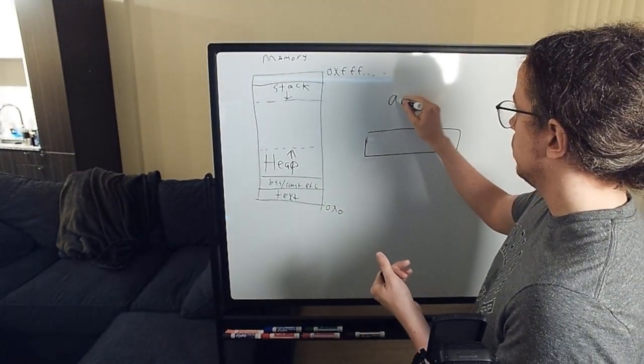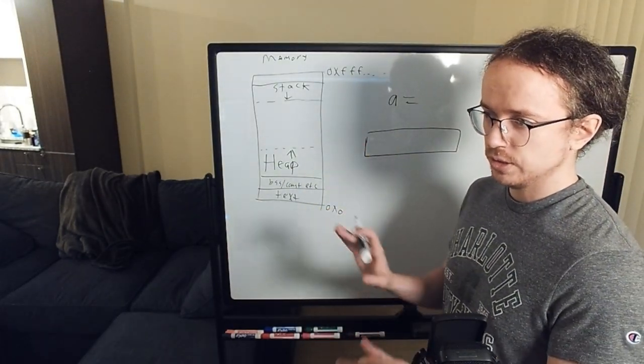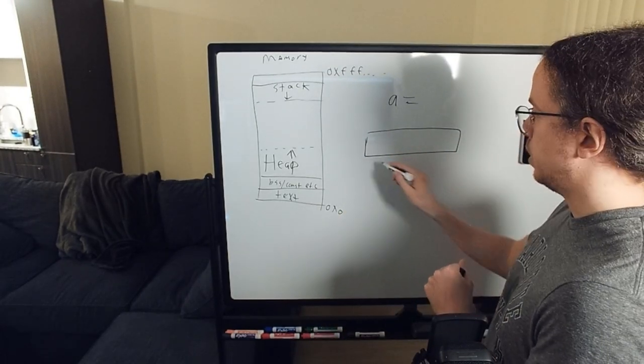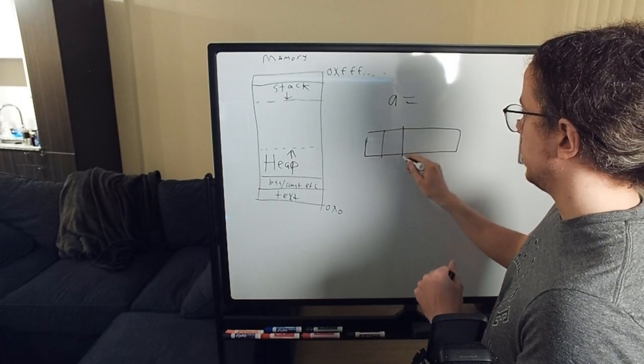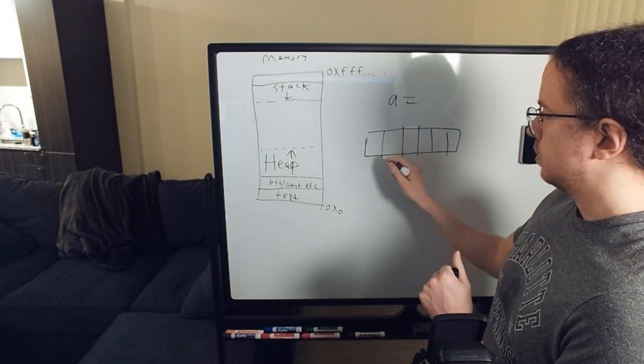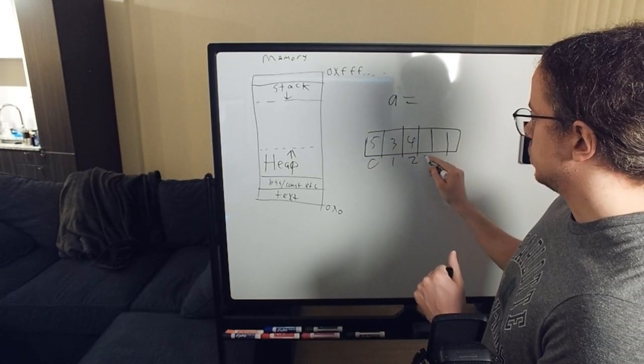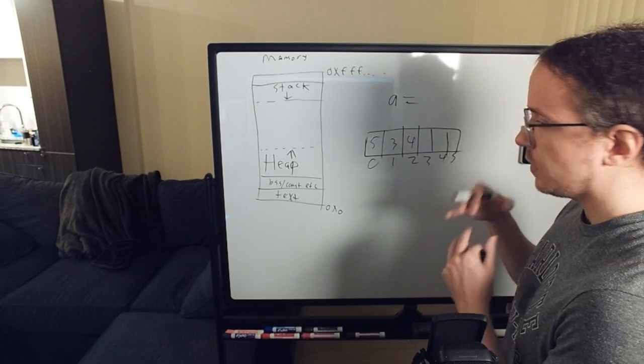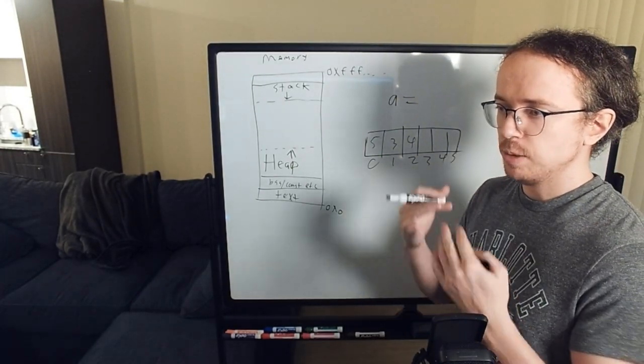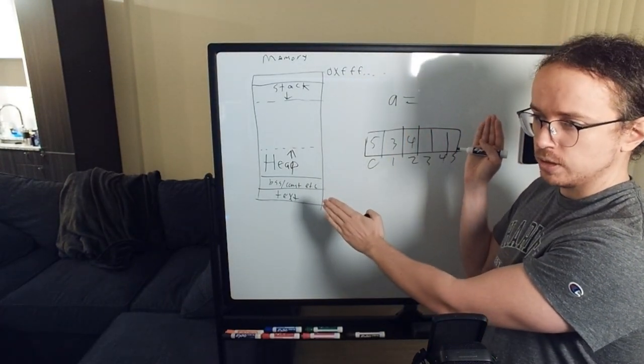So if you have an array, it doesn't matter what language you're using, doesn't matter if it's Java, C, whatever. An array is basically a chunk of memory. We're used to talking about arrays as values and indexes. So you have some values in your array, you have some indexes in your arrays, and this is the most easily mapped data structure to memory. An array is just a tiny chunk of memory that we've carved out.